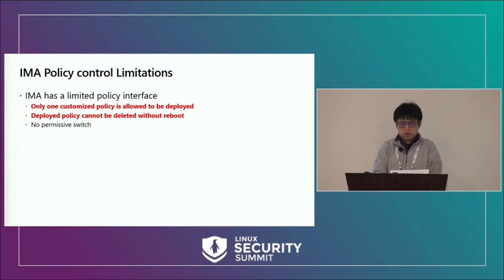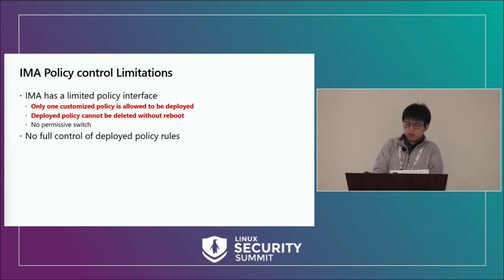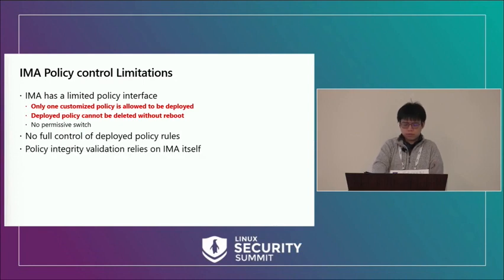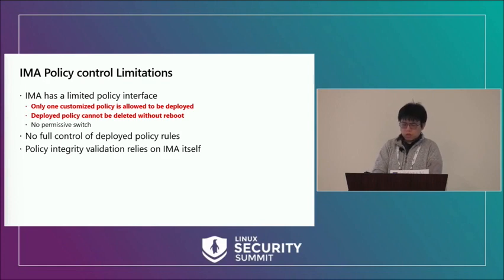IMA also has no permissive switch, unlike SELinux and IPE — this feature is extremely useful for designing and experimenting with new policies. Additionally, IMA doesn't have full control of deployed policy rules; in some cases it implicitly adds rules with higher priority than user-deployed rules, which can be problematic. Finally, IMA uses itself to verify the integrity of the policy file, which can be affected by multiple factors like IMA key rings, extended attributes, or the block list. We think using other mechanisms would be better for verifying policy integrity.